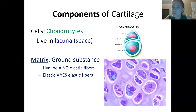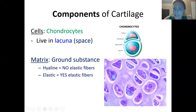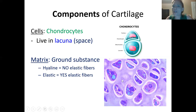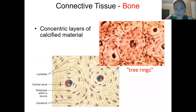That little cave — the space itself — is called a lacuna if singular, or lacunae if plural. So we have the chondrocyte, which is the cell, and then the space that the cell lives inside of is the lacuna. For hyaline cartilage the ground substance is smooth and glassy with no fibers, whereas elastic cartilage is going to have elastic fibers.